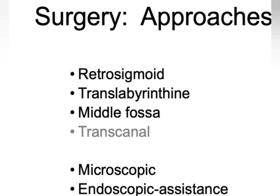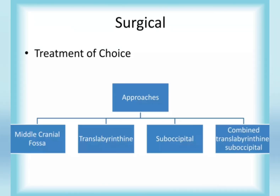In surgery, we do retrosigmoid, trans-labyrinthine, or middle fossa approach, sometimes in combination. A microscope is used to operate, and sometimes an endoscope assists to visualize internal structures. The common approaches are middle cranial fossa approach, trans-labyrinthine approach, suboccipital or retrosigmoid approach, or combinations of these to resect the acoustic neuroma.